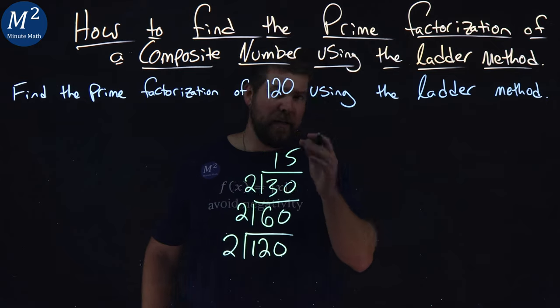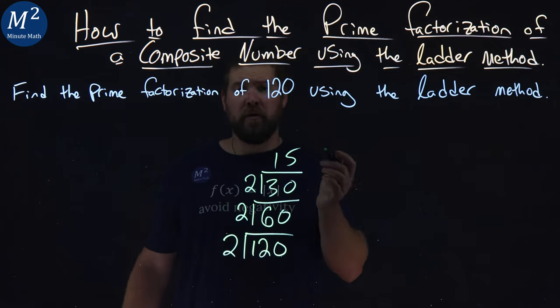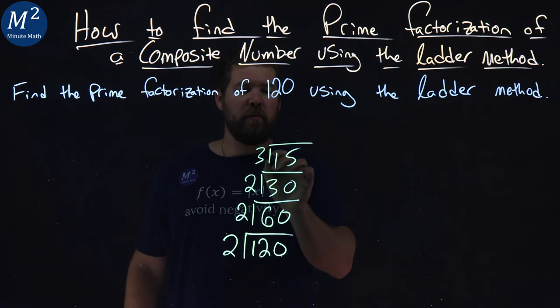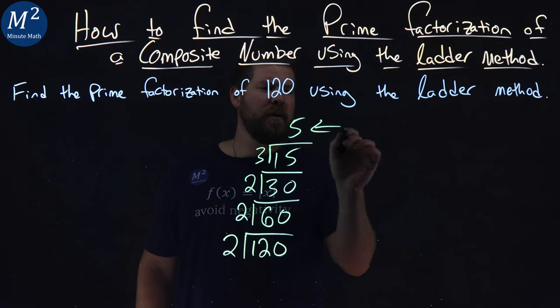Now, 15 is no longer an even number, but the next prime number up is a 3. Now, 3 goes into 15. So with a 3 there, 3 goes into 15 five times, and our end result is prime.